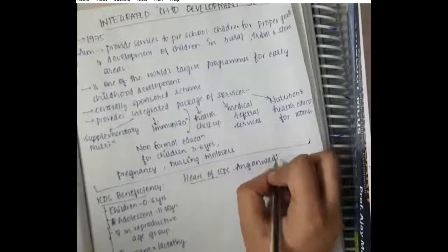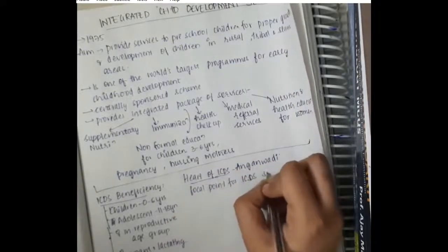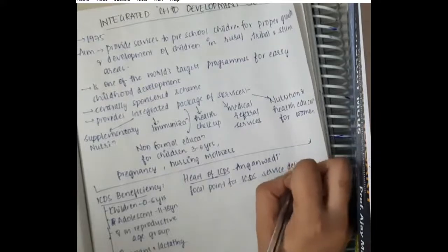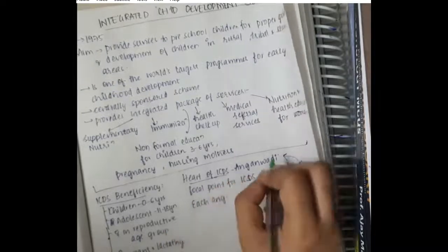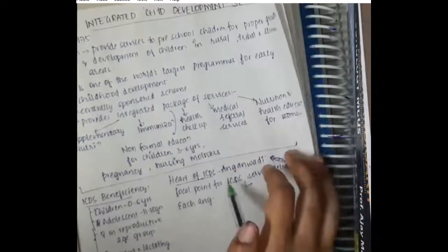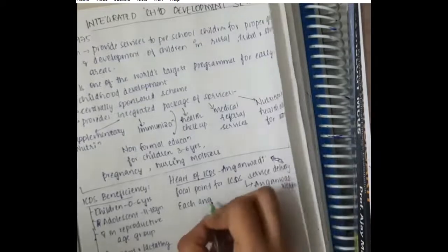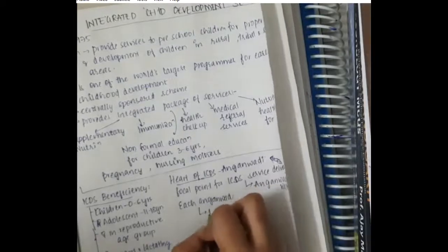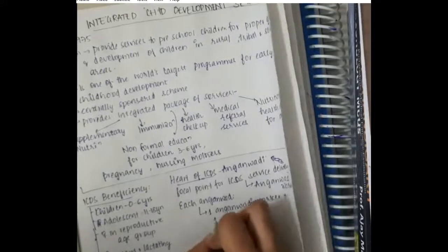The heart of ICDS is Anganwadi. The focal point of ICDS delivery is the Anganwadi worker. The Anganwadi worker delivers everything in this program. Each Anganwadi has one Anganwadi worker and one helper.